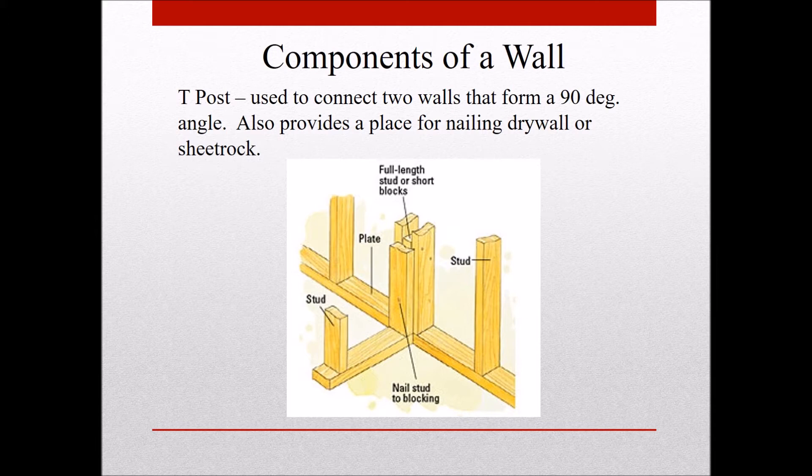A T-post is used to connect walls that form a 90-degree angle. There's a stud here, a full-length stud here, and a block between them. This is nailed into the wall assembly. When this wall is built, the wall comes in this direction, a stud is nailed on the end of the wall, and when you stand both walls up, this is what you nail them together with.